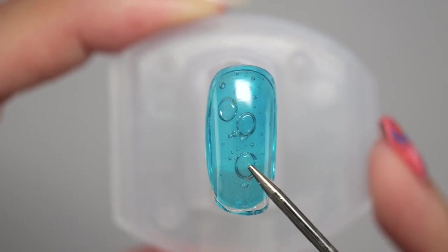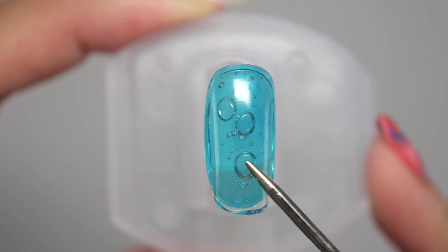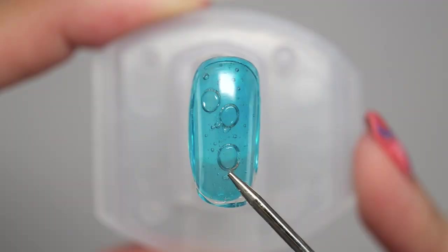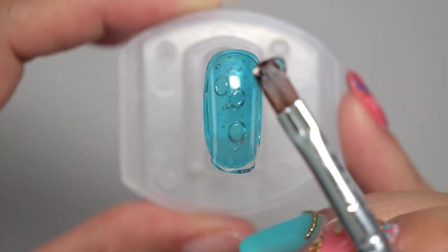Since the bubble nail has hollow bubbles, this area will inevitably become weak. So apply hard gel to strengthen it.